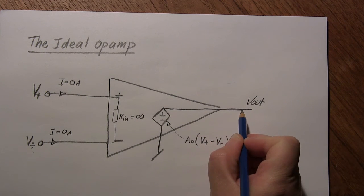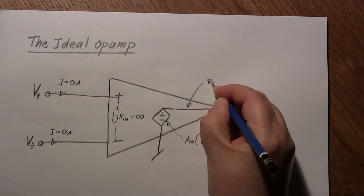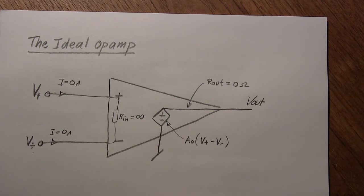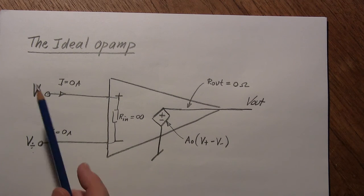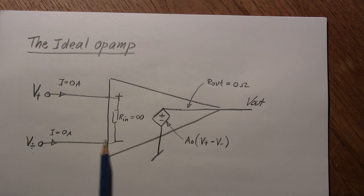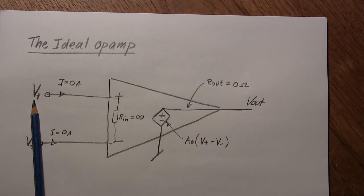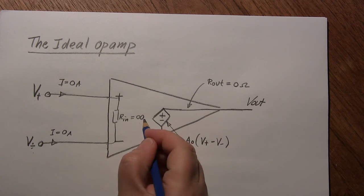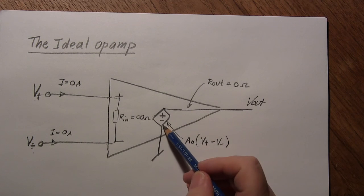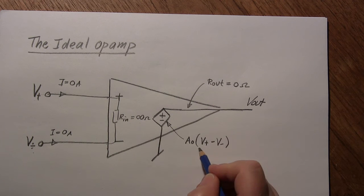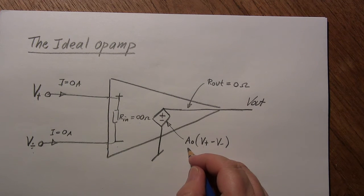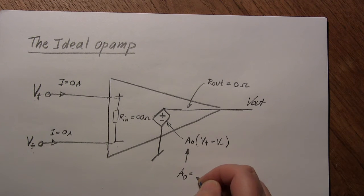On the output side, there is just a wire, which means R_out must be zero ohms. So for the ideal op-amp: no current flows into any input pin, R_in is infinite, and the dependent voltage source output depends on the difference between the non-inverting and inverting inputs times the open loop voltage gain. In the ideal case, that open loop voltage gain is infinite.